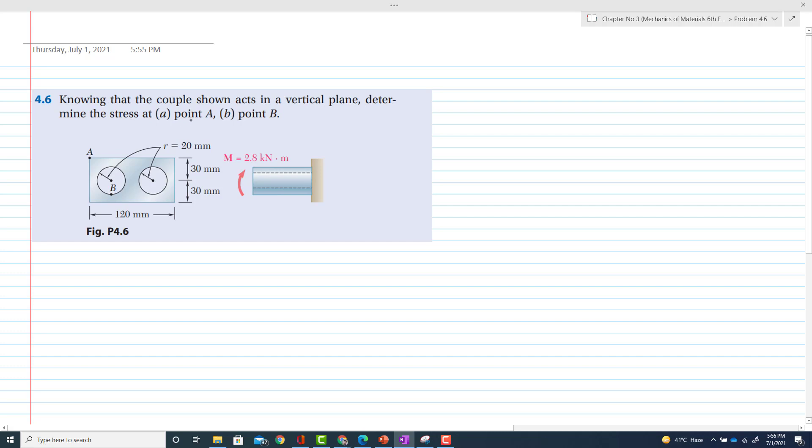So this is the beam, a rectangular beam having two holes, and the dimension of this cross section is given. The moment in vertical plane is also given. It will tend to bend the beam like this way.